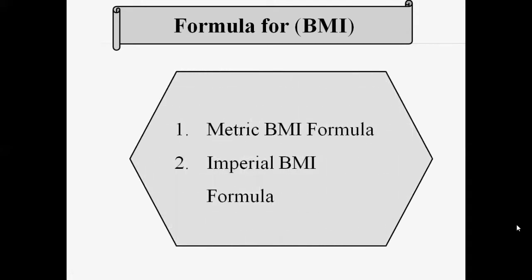BMI is calculated by two systems. Two formulas are used: one is the metric BMI formula and the other is the imperial BMI formula. In this lecture, we will calculate the BMI by the metric formula, and in the next lecture, we will calculate the BMI through the imperial BMI formula.